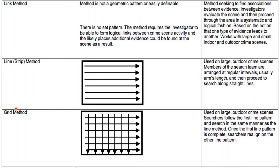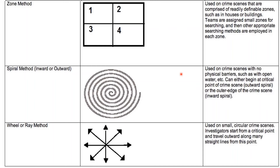The grid method: the investigation search starts from left to right and from top to bottom. This is also used on large and outdoor crime scenes. Searchers follow the first line pattern and search in the same manner as the line method. Once the first line pattern is complete, searchers realign on the other line pattern. The zone method divides crime scenes into four zones — one, two, three, and four.